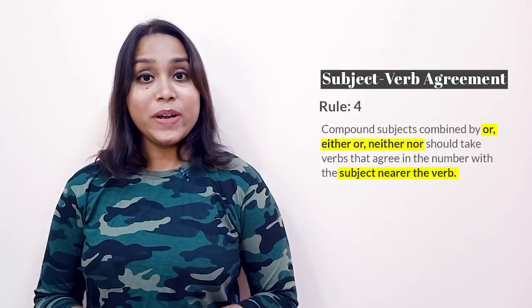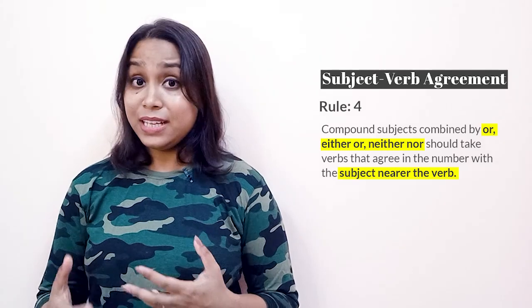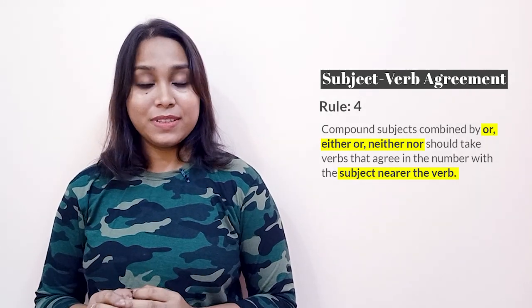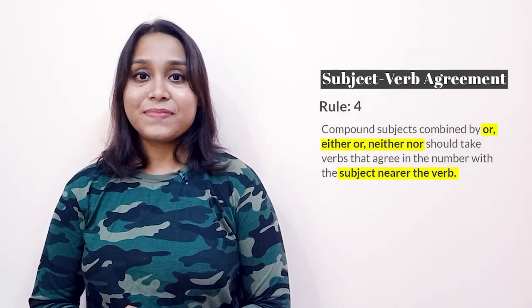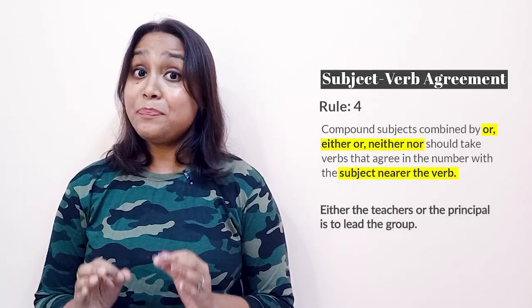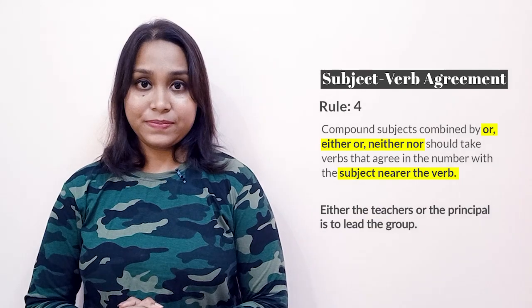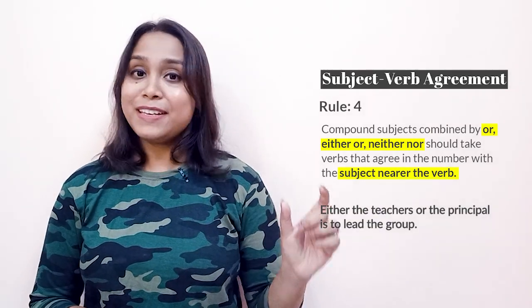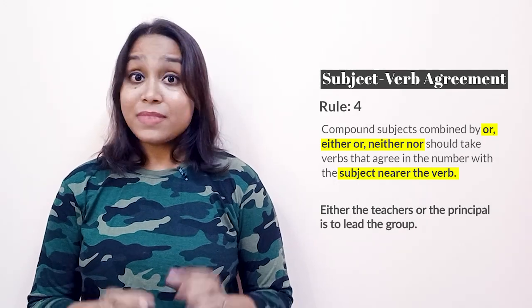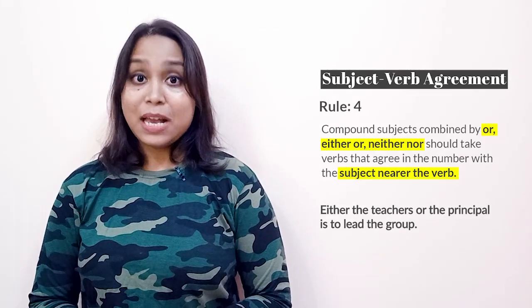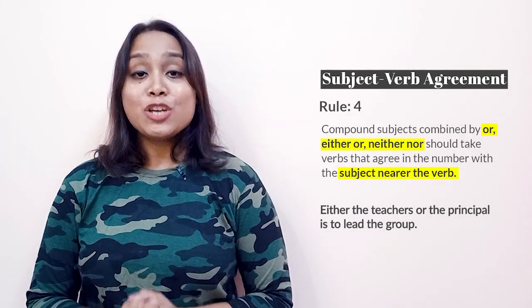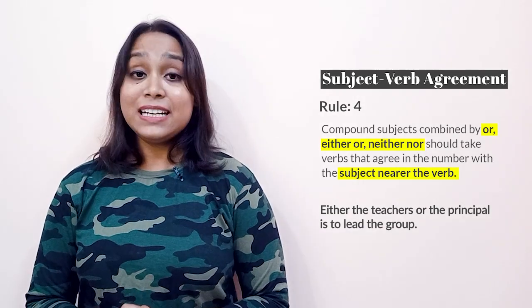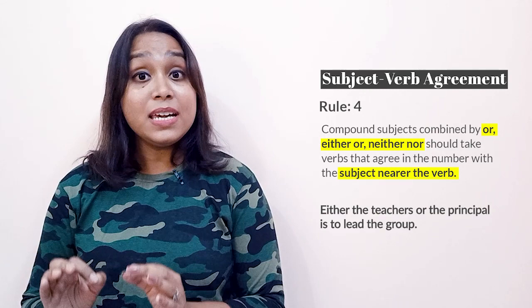Rule number four: a compound subject joined by conjunctions like either/or, neither/nor should take the verb that is nearer to the second subject. For example, either the teachers or the principal is to lead the group. The teachers is a plural subject but the principal is a singular subject. The verb is nearer to the singular subject 'principal', so the verb should be singular.